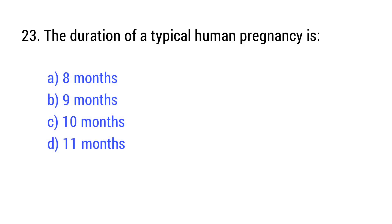Question number 23. The duration of a typical human pregnancy is? The right answer is option B: Nine months.